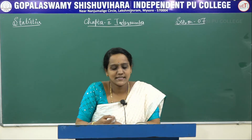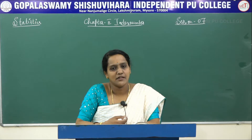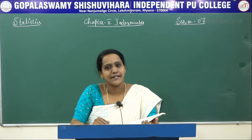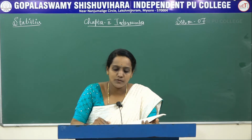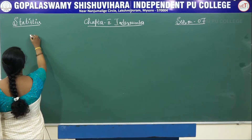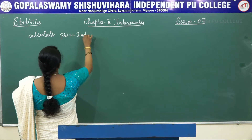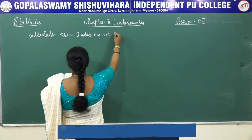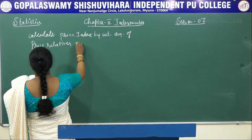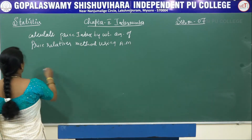Welcome to the class. I'm Ashwini, lecturer in statistics. Today's class topic is about weighted average price relatives using arithmetic mean and geometric mean. In the last classes we solved averages using AM and GM for unweighted price relatives. In this class we are going to solve the weighted average price relatives using arithmetic mean and geometric mean. This is the first problem: calculate price index by weighted average of price relatives method using AM, that is arithmetic mean, and this is the data they have given.